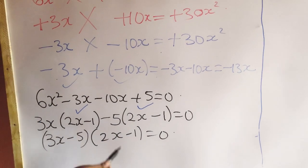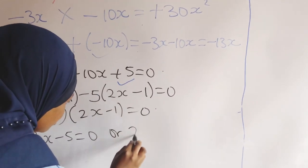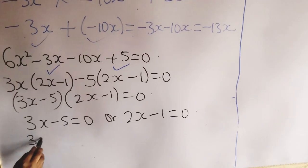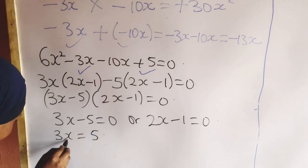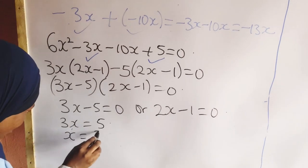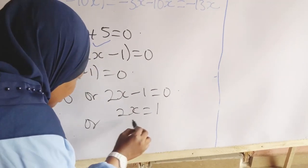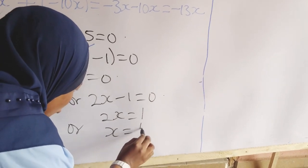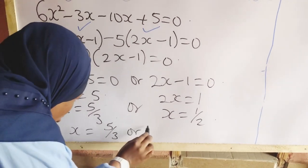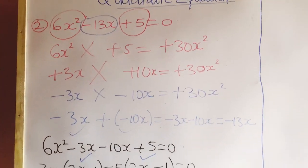Take the factorized ones together: 3x minus 5, then take one from inside the brackets, 2x minus 1, everything equal to 0. This means 3x minus 5 is equal to 0 or 2x minus 1 is equal to 0. Taking the first: 3x equals 5, dividing both sides by 3 gives x equals 5 over 3. Or: 2x equals 1, dividing both sides by 2 gives x equals 1 over 2. So x equals 5 over 3 or 1 over 2 — these are the roots of this quadratic equation.